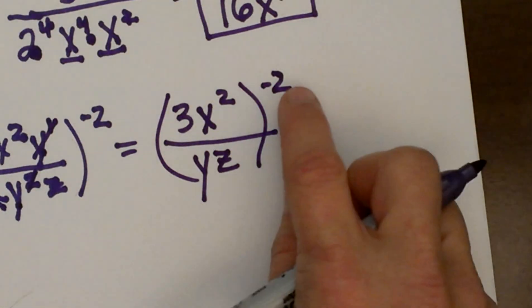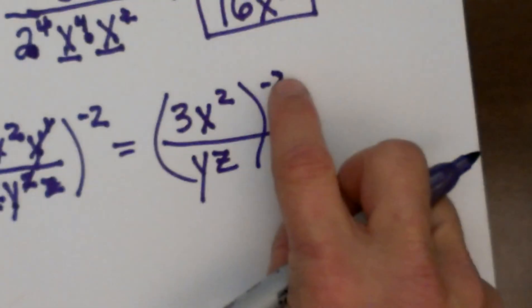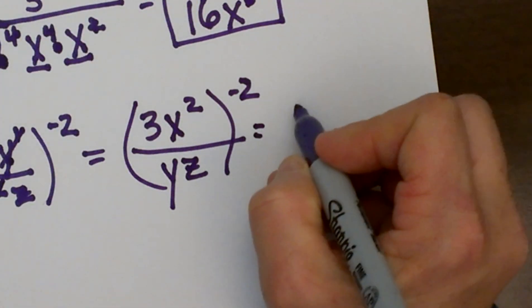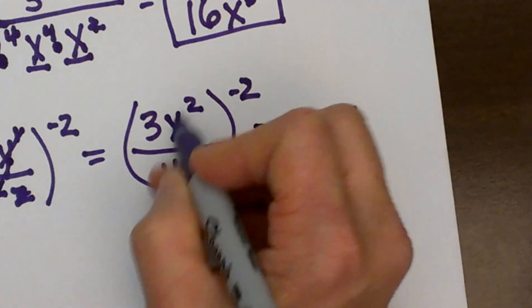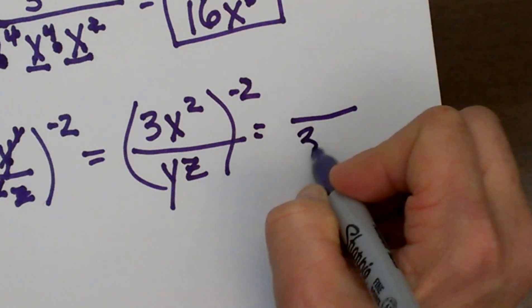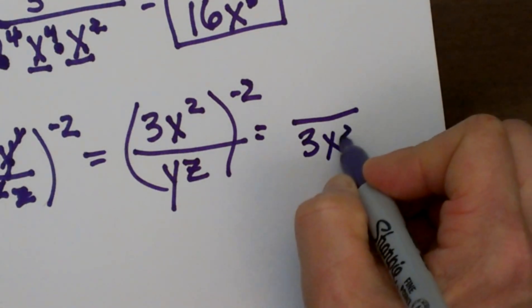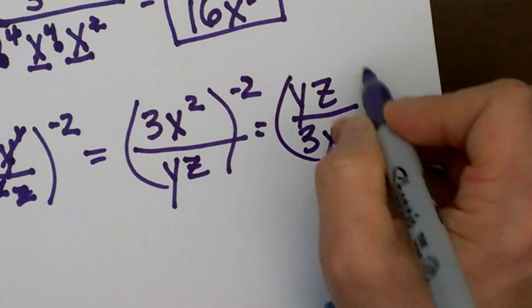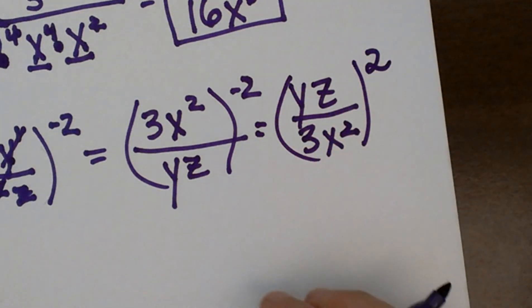Okay, now what I can do is since this whole thing is being raised to the negative second, I can literally flip the fraction inside here and I'm going to send the 3x^2 to the bottom and the yz to the top and then make that a positive 2. That way I'm not moving everything twice.